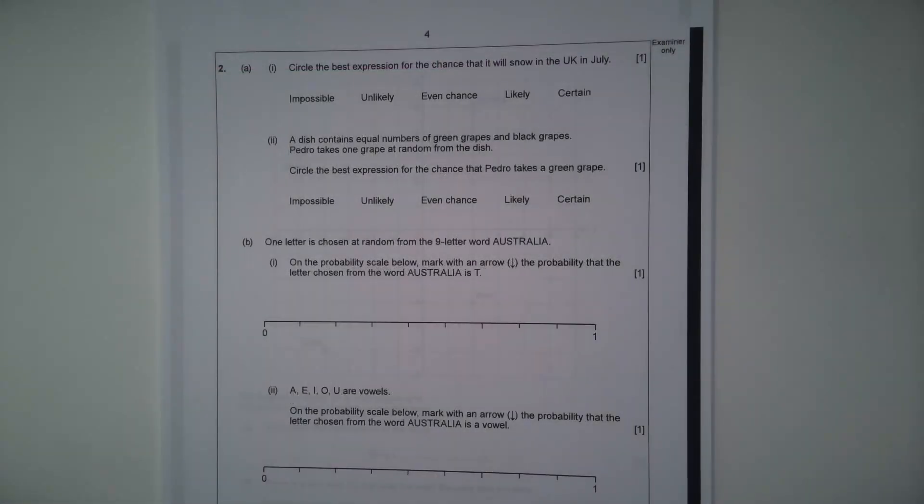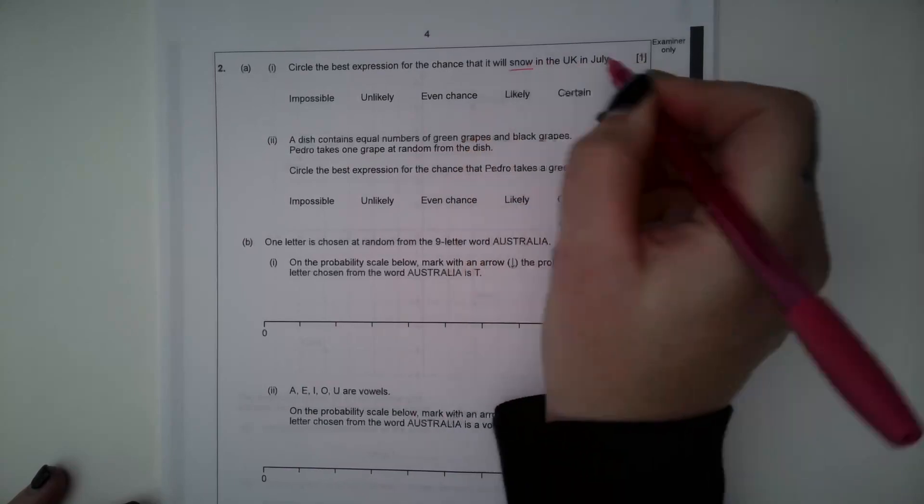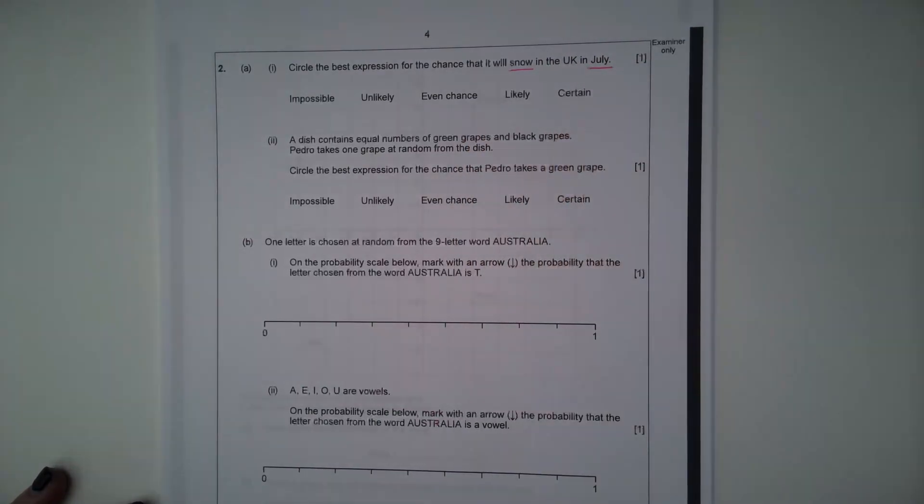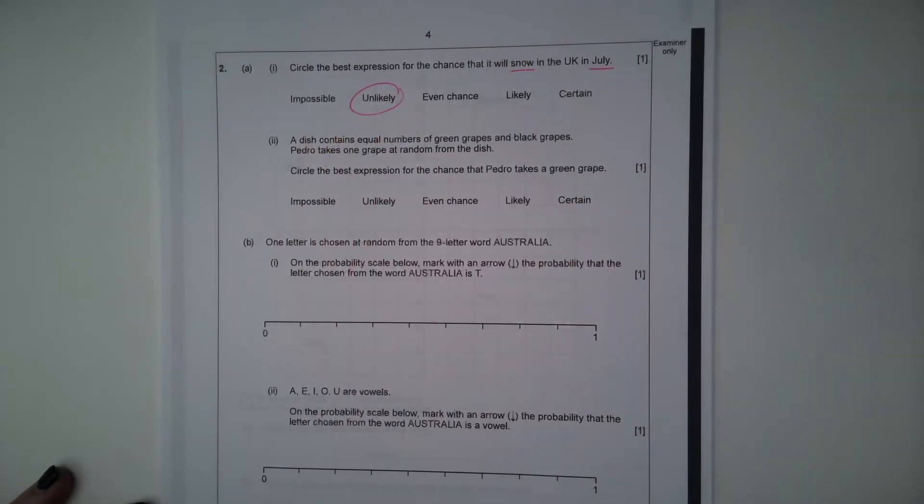Question 2a, part 1. Circle the best expression for the chance that it will snow in the UK in July. So we're looking at snow in July. We know that it can snow, so it's not impossible, but it's very unlikely it's going to snow in July because that's one of our summer months. So it would be unlikely, but not impossible because weather's unpredictable.